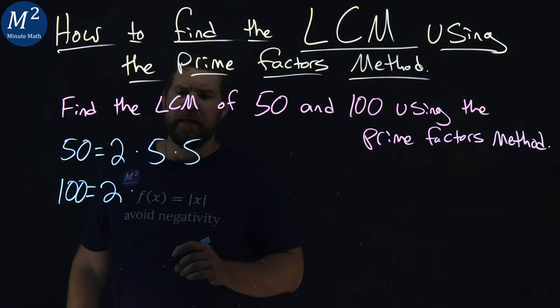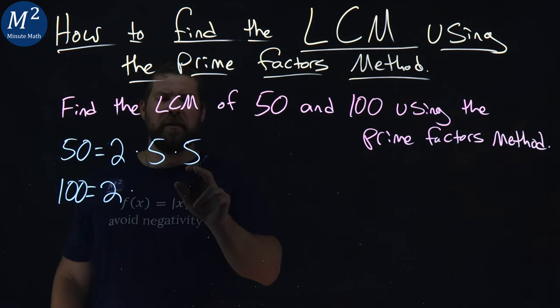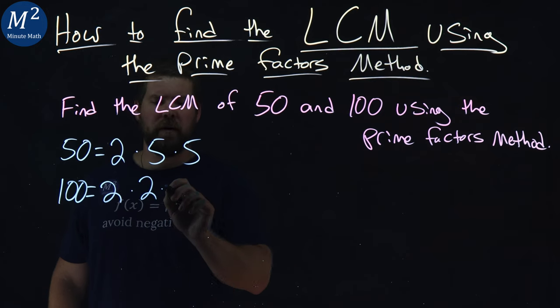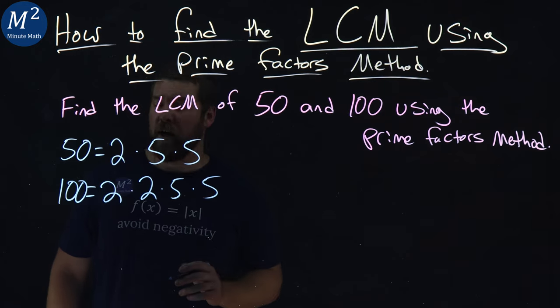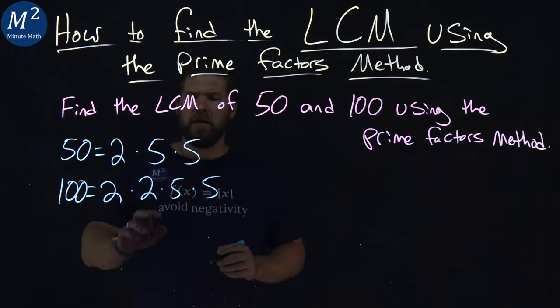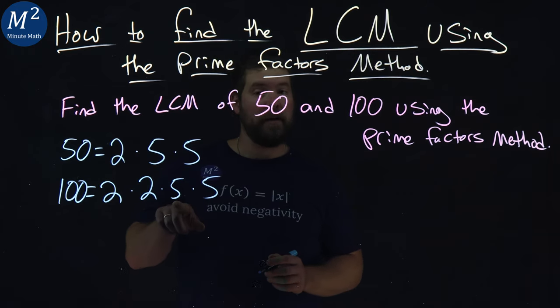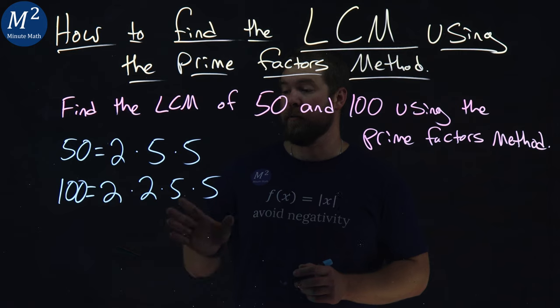Times, and then 50 is what we just found, 2, 5, and 5. So we have 2, 5, times 5, right there. So again, 2 times 2 is 4, times 5 is 20, times 5 is 100. Got it.